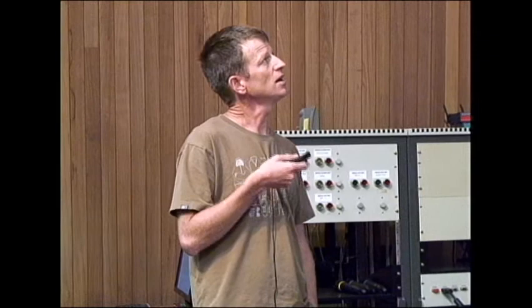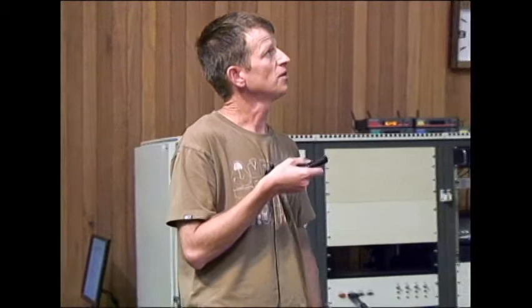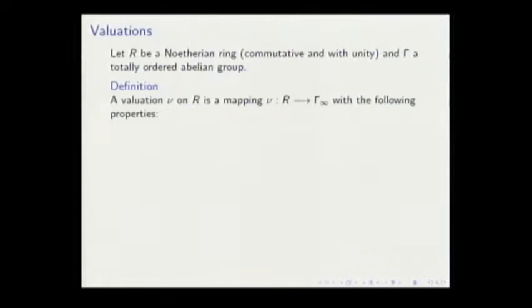Valuations will be on a Noetherian ring R, always assumed commutative with unity, and Γ a totally ordered abelian group. A valuation is a mapping that takes R to Γ ∪ {∞}, where Γ ∪ {∞} is Γ with a symbol infinity with the extension of order and addition as usual with the following properties. Property (V1): ν(ab) = ν(a) + ν(b) for every a, b in the ring.